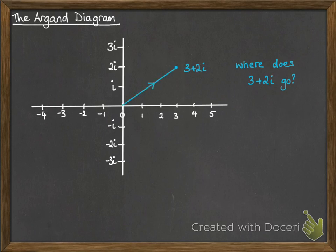Okay, so we can also think about it as a vector. So this would be the point that is 3 away in the real direction and 2 away in the imaginary direction.